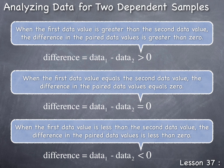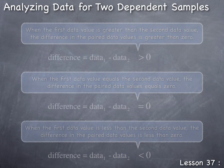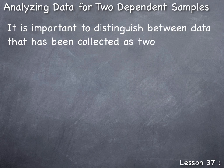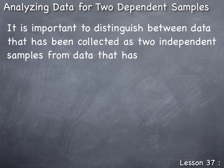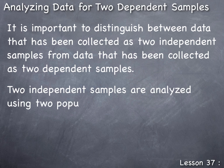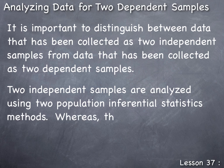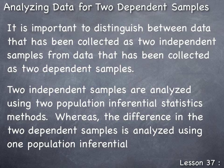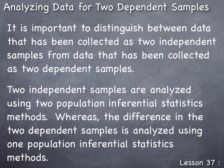It is important to distinguish between data collected as two independent samples from data collected as two dependent samples. This is because two independent samples are analyzed using two population inferential statistics methods, whereas the difference in the two dependent samples is analyzed using one population inferential statistics methods. The following examples will help demonstrate the analyzing data for two dependent samples.